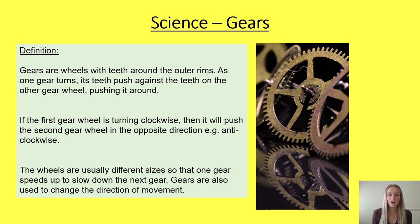So what are gears? Gears are wheels with teeth around the outer rims. As one gear turns, its teeth push against the teeth on the other gear wheel, pushing it around. If the first gear wheel is turning clockwise, then it will push the second gear wheel in the opposite direction — anti-clockwise. The wheels are usually different sizes so that one gear speeds up or slows down the next gear. Gears are also used to change the direction of movement.